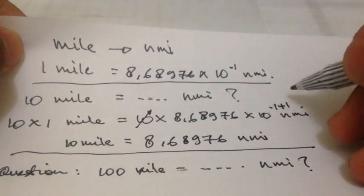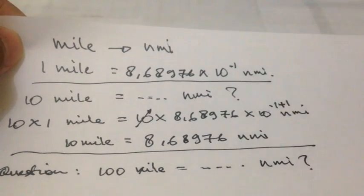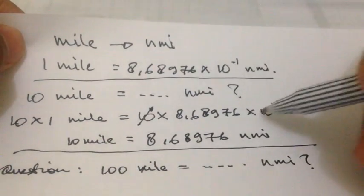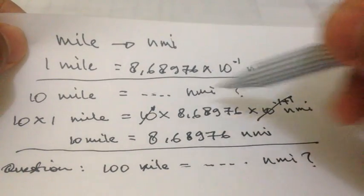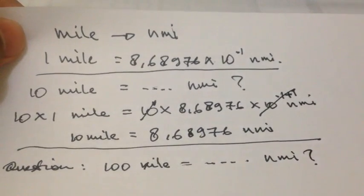So, 10 power 0, right, 10 power 0 is equal to 1. So, we don't need it. We don't need this as well. So, what left from them is only this number. Well, that's the answer.